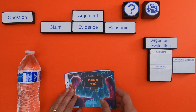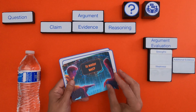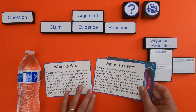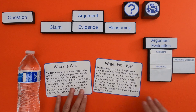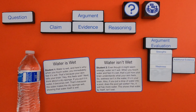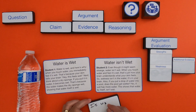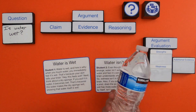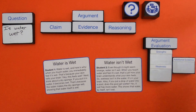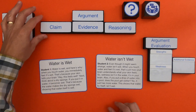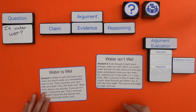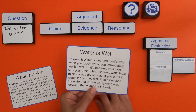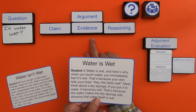The first thing we want to do is look at the arguments. You can see the question they're trying to answer: is water wet? Student one and student two are each answering that question. As you read through an argument, what you're looking for is a claim, evidence, and reasoning.